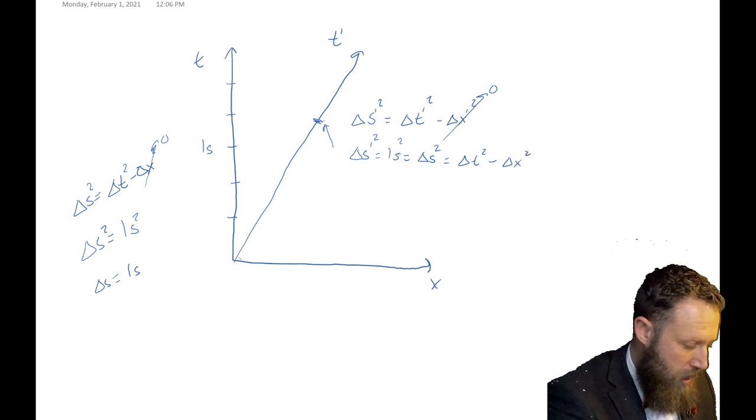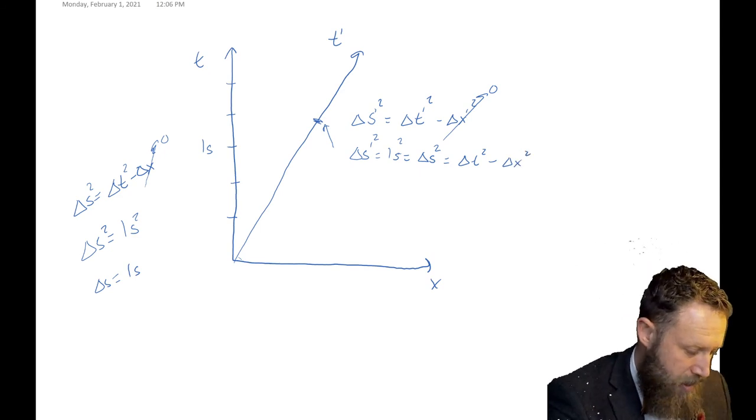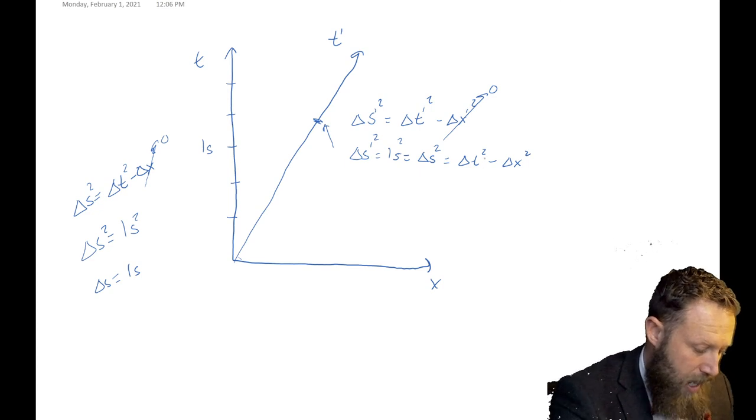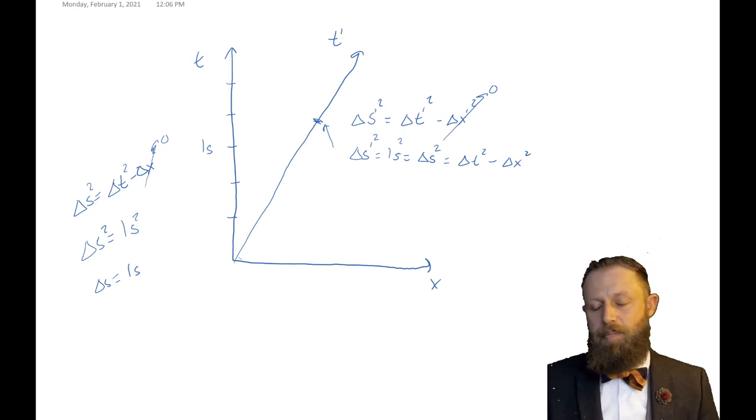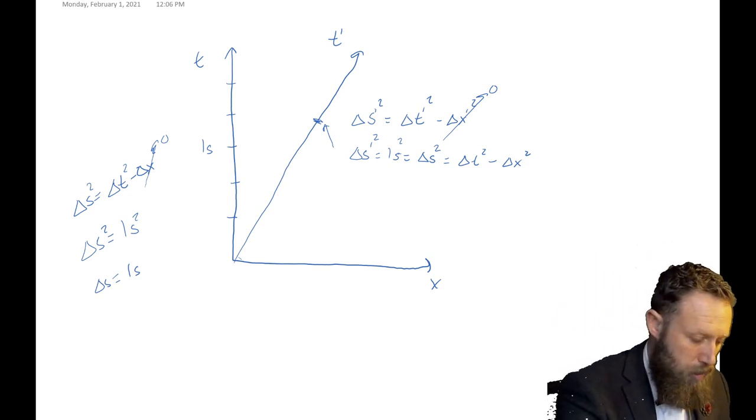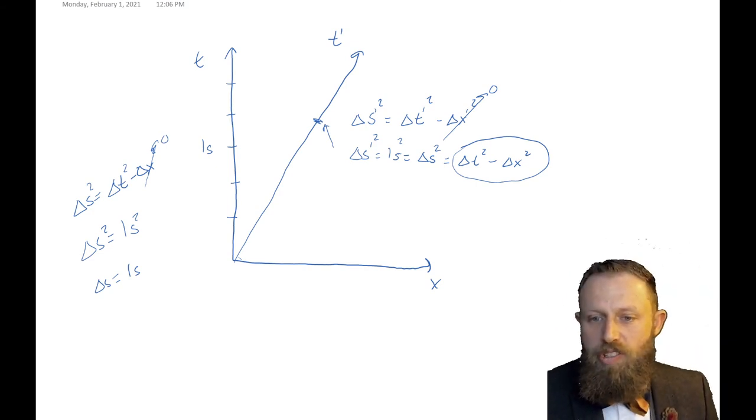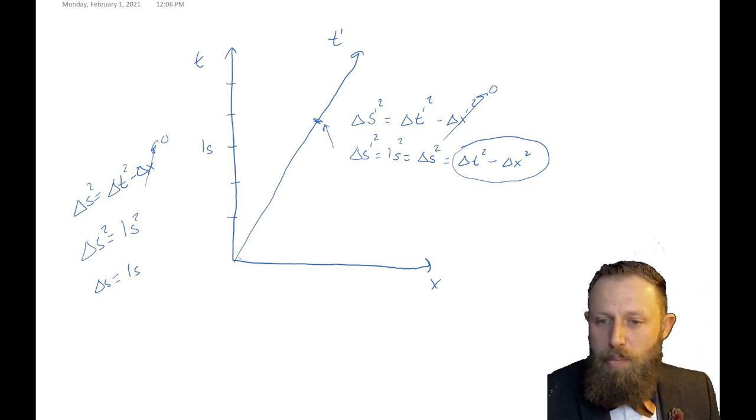So this point of one second, which is a space-time interval, is at the position where delta t squared minus delta x squared is equal to one second.